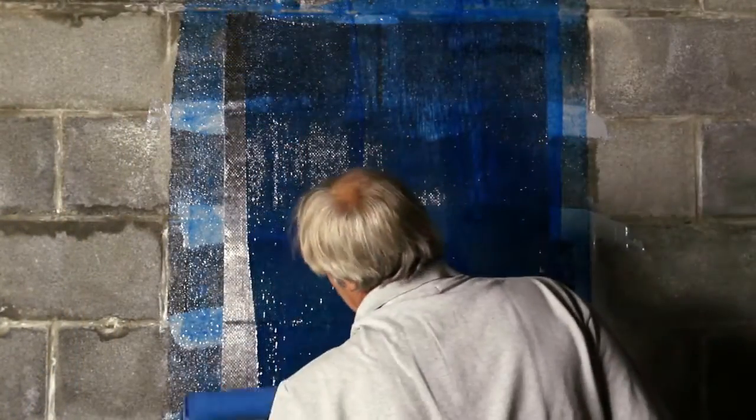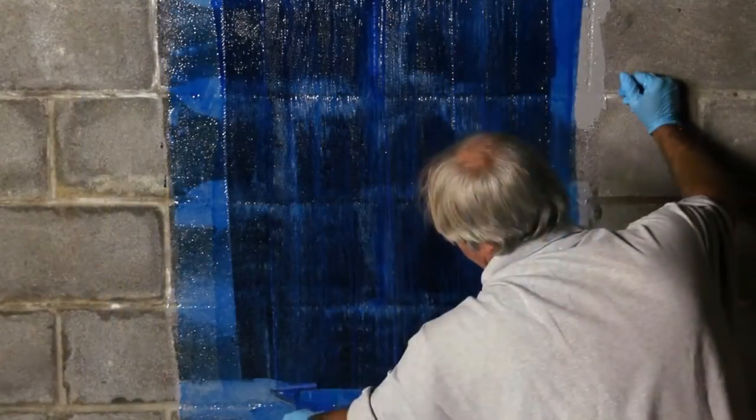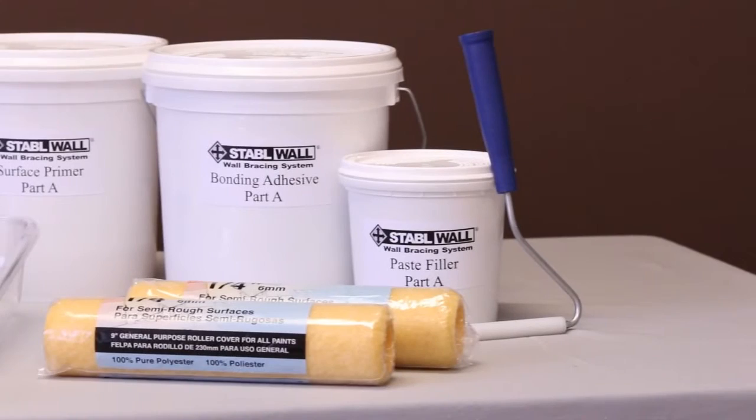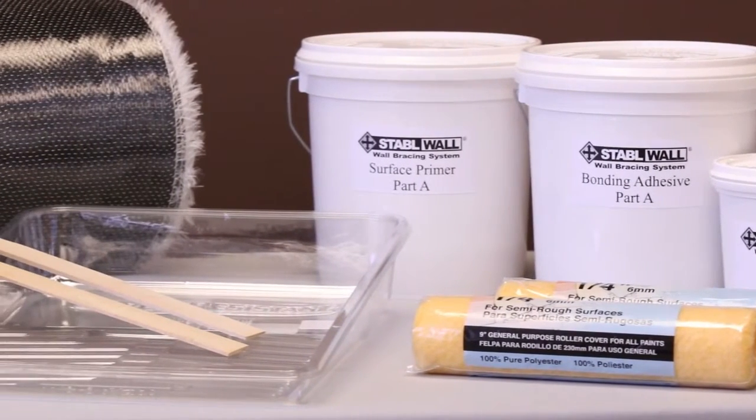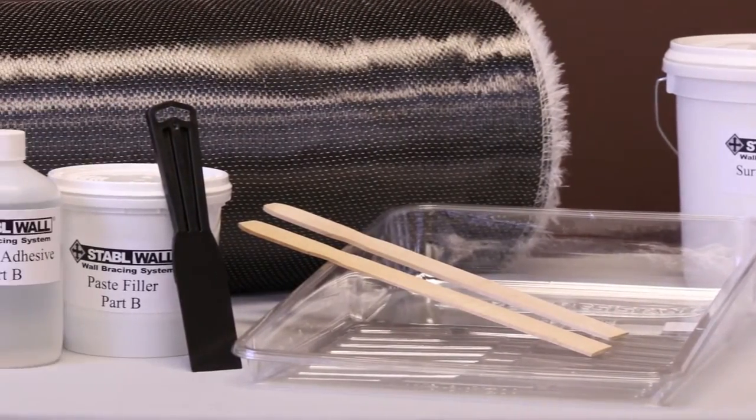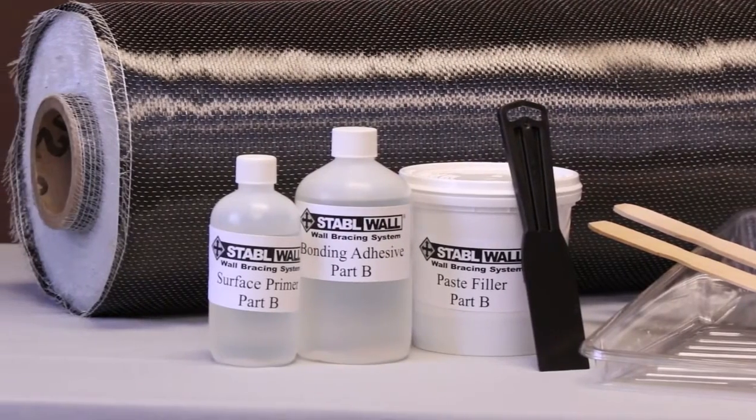It's important to install StableWall at a temperature above 60 degrees and that the temperature remains above 60 degrees for one to two days until it has cured. Each kit comes with enough materials to install two strips, but for this demonstration, we're only installing one. If you install them both, make sure you follow each step for both surfaces at the same time so that your mixed materials don't dry prematurely. Let's take each step one at a time so you can see it in action.